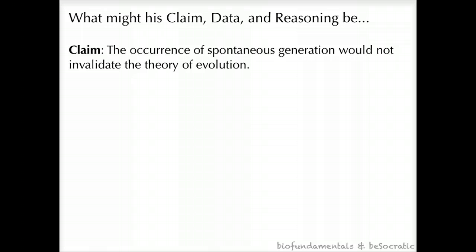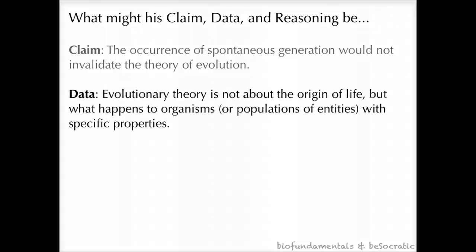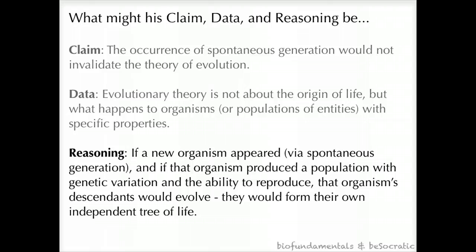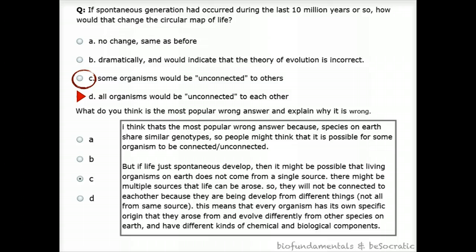His claim would be that the occurrence of spontaneous generation would not invalidate the theory of evolution. His data would be that evolutionary theory is not about the origin of life, but what happens to organisms or populations of entities with specific properties. His reasoning would be: if new organisms appeared via spontaneous generation, and if those organisms produced a population with genetic variation and the ability to reproduce, that organism's descendants would evolve — they would form their own independent trees of life. When you're working through a B. Socratic question and you're asked to explain why a wrong answer is wrong, be careful and think about what your claim is, what data you're using to support that claim, and how you argue from data to conclusion.